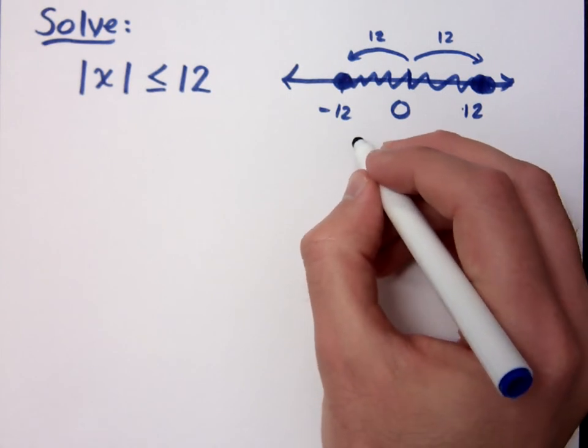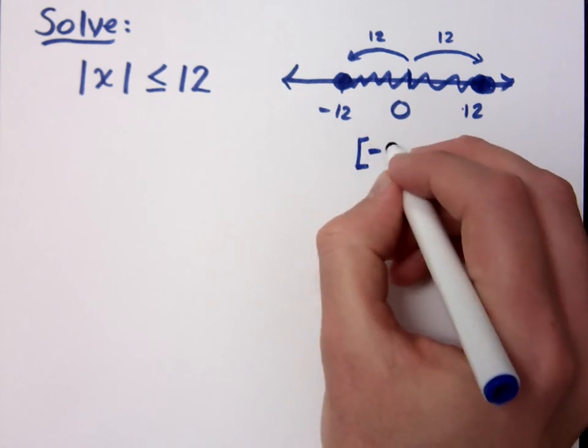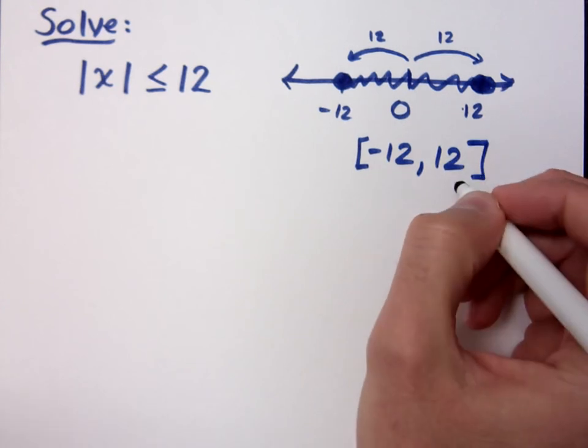Negative 12 is less than or equal to x. But interval notation. Oh, bracket, negative 12. Bracket, negative 12 to 12. Bracket.